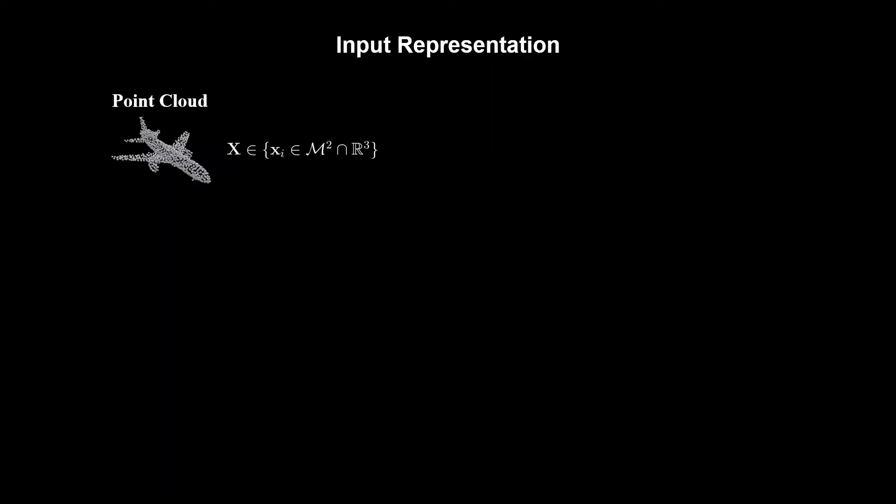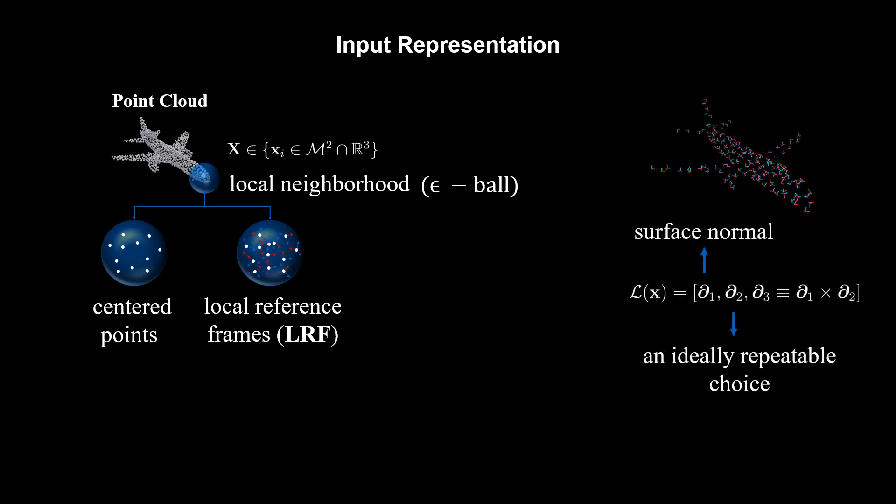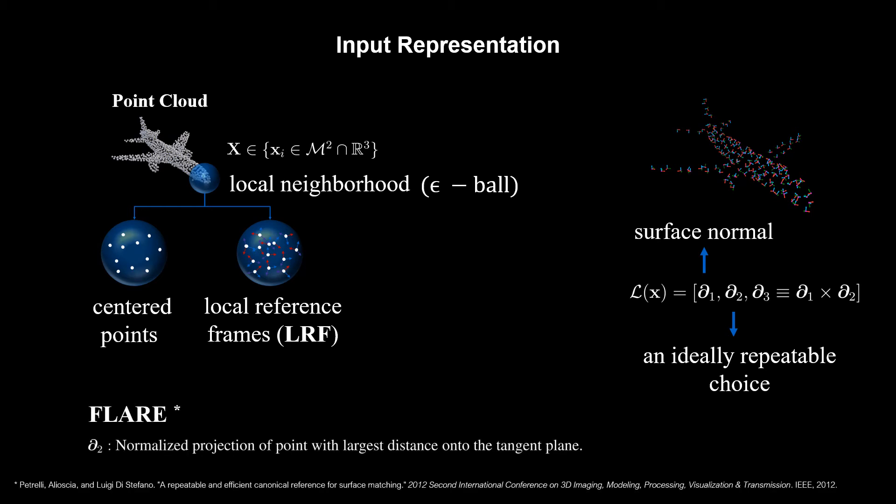Our input is a raw point cloud sampled on a 3D surface. On each point, we query a local neighborhood and compute a tangent plane and two repeatable vectors spanning that plane. While it's common to pick the first direction as the surface normal, the second vector is heuristically determined. In this work, we use the well-accepted FPFH direction and represent the resulting orthonormal frame via quaternions.